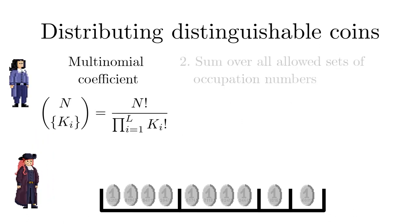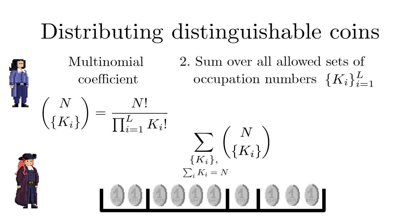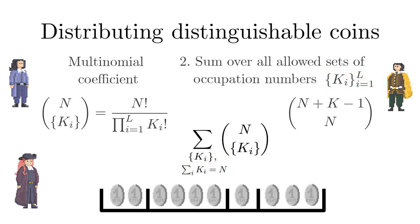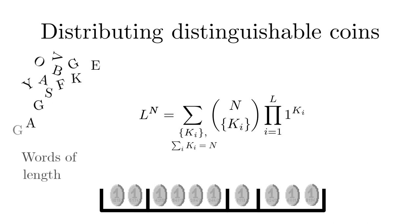The second step is to sum the multinomial coefficients over all sets of admissible occupation numbers. There are n plus k minus 1 choose n such sets. But there is now a trick to evaluate this sum. Identifying the multinomial theorem leads to the simple result l to the power n. This is the same as the number of ordered samples of size n from a population of size l with replacement. Like forming words from an alphabet.